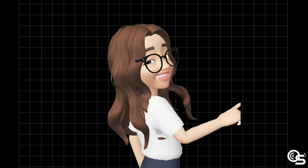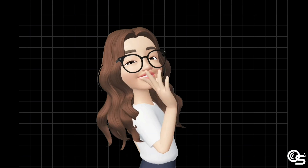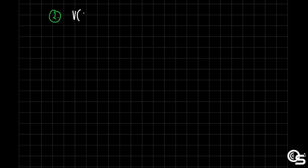Next, example number 2. We have the given vertex at the origin (0, 0) and focus at (0, 2).